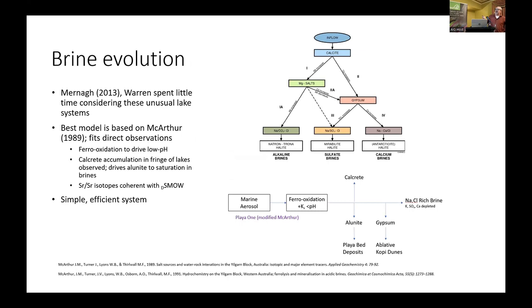In terms of brine evolution, Murnane et al. in 2013 did a great study mostly aimed at brine sulfate of potash — they didn't study alunite, just a paragraph in there. Typically continental brines start with the inflow, then go down the trouser leg of fate: either you form magnesium salts at high pH and get your natron, trona, alkaline brines; you can form sulfate brines, which are the targets for the salt lake potash guys; or if gypsum comes out, you end up with calcium-rich brines. None of these are directly involved in the genesis of alunite.